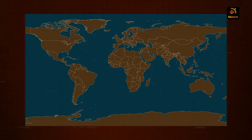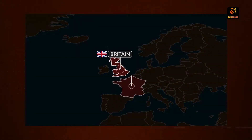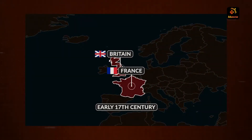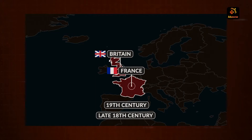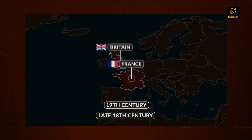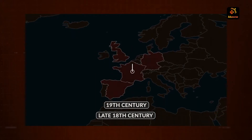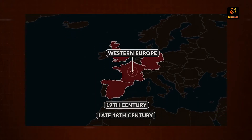The early nations of the world — the first and foremost modern nation-states were Britain and France. As we move forward in history, we see that in the 19th century and the late 18th century, majorly the Western European countries grew as nation-states.